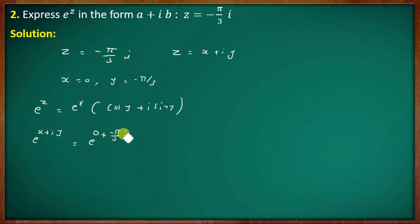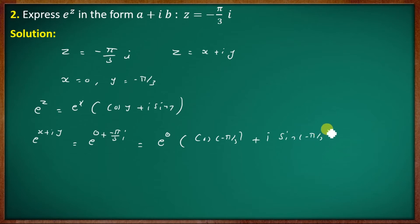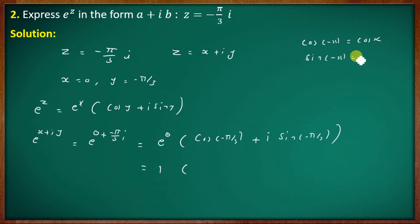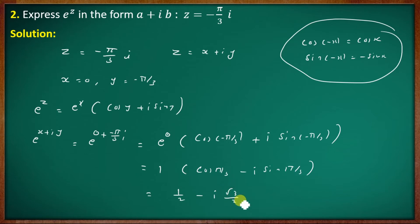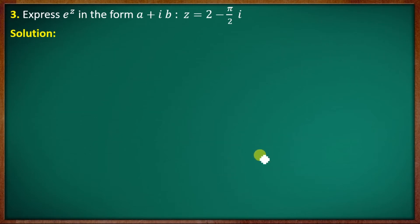z equals −5π/3 i, so x equals 0 and y equals −5π/3. We get e raised to 0 times (cos(−5π/3) + i sin(−5π/3)). Using cos(−x) = cos x and sin(−x) = −sin x: cos(5π/3) equals 1/2 and −i sin(5π/3) equals −i(√3/2). So the answer is 1/2 − i√3/2.